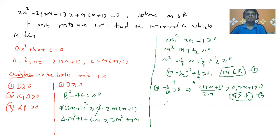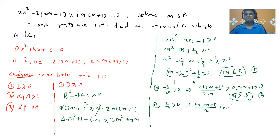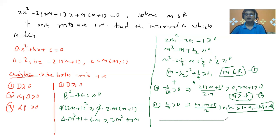Now for the third condition: alpha·beta = c/a should be greater than 0. So m(m+1)/2 > 0, meaning m(m+1) > 0. The solution is m ∈ (−∞, −1) ∪ (0, ∞). This is the third solution.